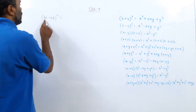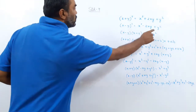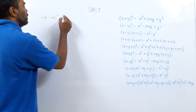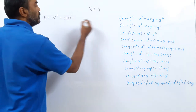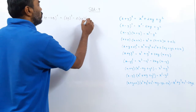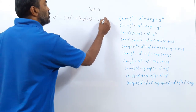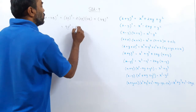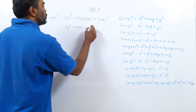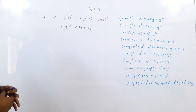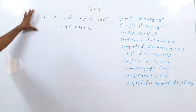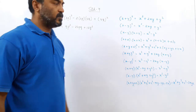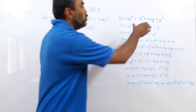If I want to find (3p-4q)², I use the formula (x-y)² where x=3p and y=4q. The expansion is (3p)²-2(3p)(4q)+(4q)² = 9p²-24pq+16q². Now the question you are going to be asked is to factorize, and when you factorize you have to know all these identities first.